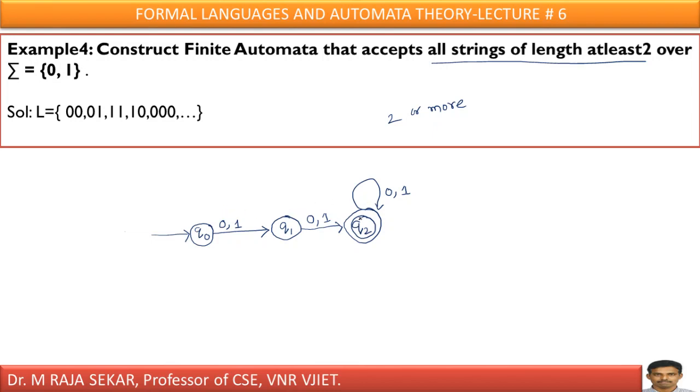0 0 means I will go to final state. After that, if you keep any number of 0s and 1s, it will stay in the state q2 itself. Anybody can understand this simple example. Thank you very much.